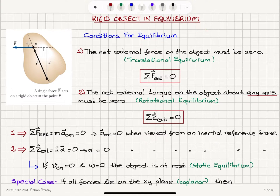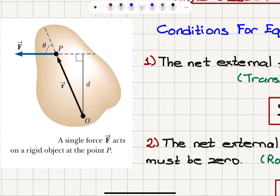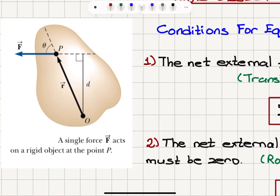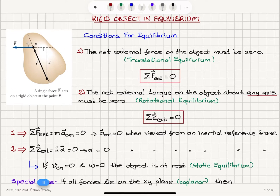We'll talk about a rigid object in equilibrium. Let's say that we have an object that is under the influence of a force F applied at an angle theta with respect to the radial vector from a pivot point O. This is our position vector of the application point of the force, that's point P, and the perpendicular distance between the force F and the pivot point O is D. This force will have a translational effect and also a rotational effect because there is a pivot point at O. So if this is an axis of rotation fixed at this point, it will just have a torque effect. Otherwise, forces can have a translational effect.